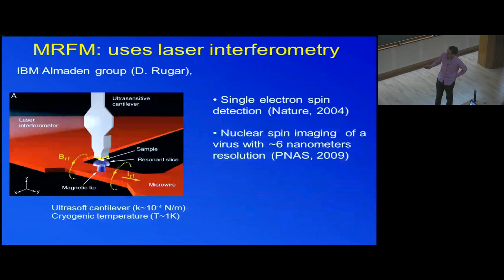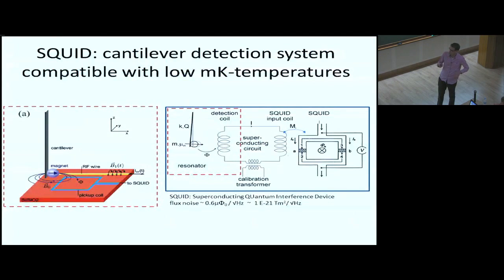The state-of-the-art uses a laser to do interferometry to measure the displacement of these force sensors. And then it was possible to detect a single electron spin and do NMR of a virus particle, leading to an MRI image at 6 nanometers resolution. And this technique, it works down to about 1 Kelvin, maybe a little bit colder. It would be 100 millikelvin sometimes if you put the laser very low in power.